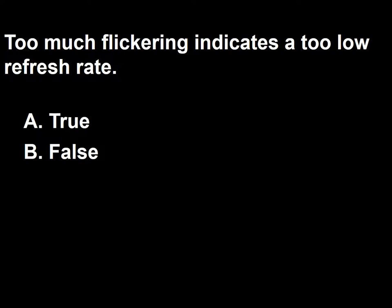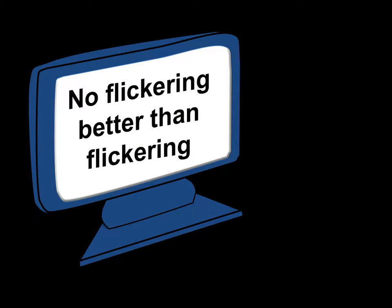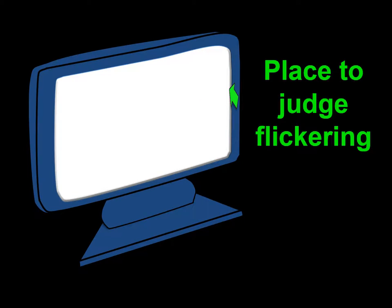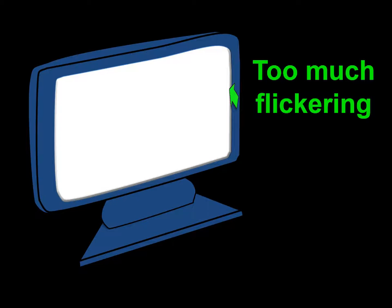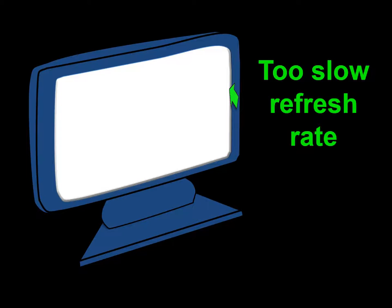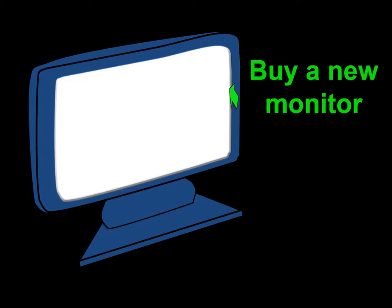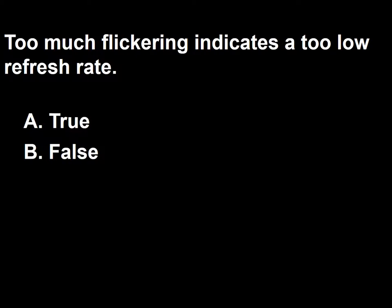Next question: Too much flickering indicates a too-low refreshing rate. A, true; B, false. No flickering is better than flickering. Look at the edge of the screen to check for flickering — if you see any, it is usually too much. Flickering indicates too slow a refresh rate and a bad screen or computer. The best thing to do if you see flickering is to buy a new computer or monitor. So the answer to this question is true.